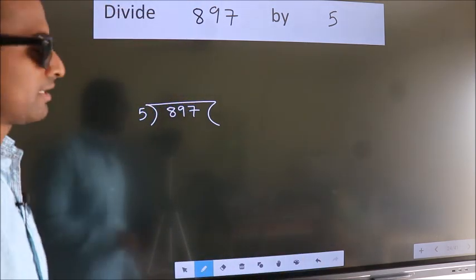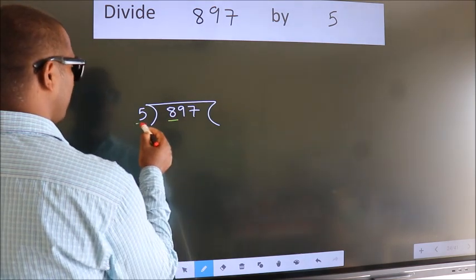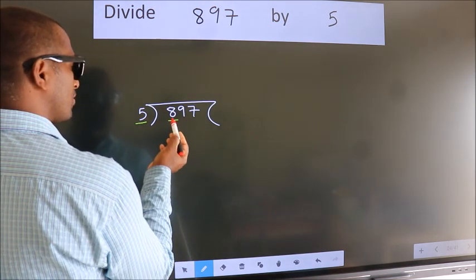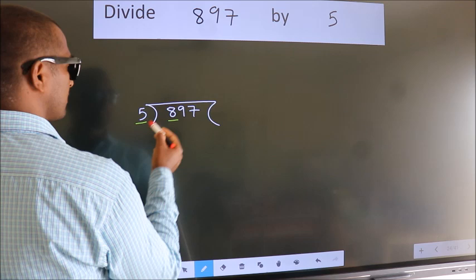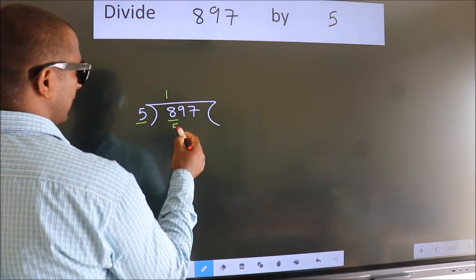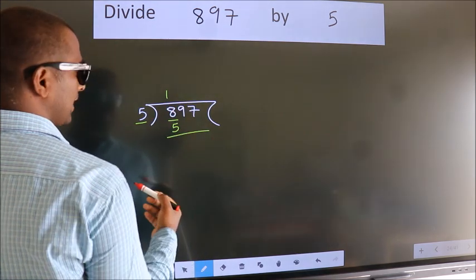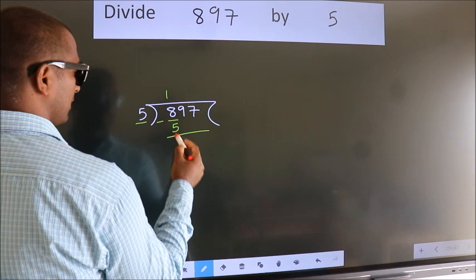Next, here we have 8, here 5. A number close to 8 in the 5 table is 5 once, which is 5. Now we should subtract. We get 3.